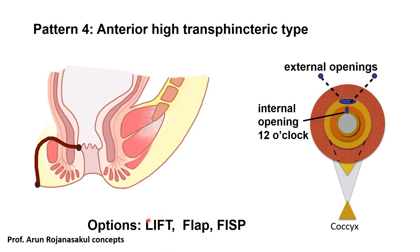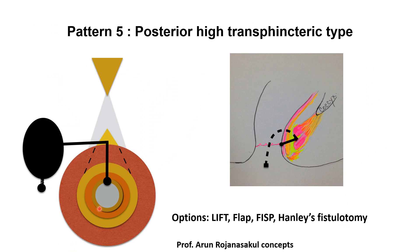Sphincter-preserving surgery — either LIFT, flap, or fistulotomy with sphincteroplasty — are the better options for anterior high transsphincteric fistula. Posterior high transsphincteric fistula starts at the dentate, crosses the internal sphincter, intersphincteric space, and external sphincter at a higher level, reaching the deep post-anal space, then going either unilaterally or bilaterally to the infralevator space, ischioanal space, and perianal space. Crossing at the higher level of the external sphincter means fistulotomy would cause incontinence, so these cases need sphincter-preserving surgery — either LIFT, flap, fistulotomy with sphincteroplasty, or modified Hanley's fistulotomy.